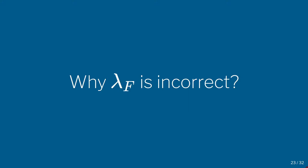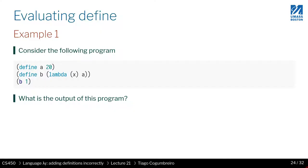So why doesn't lambda f follow the behavior of bracket? Let's try to understand by means of two examples.